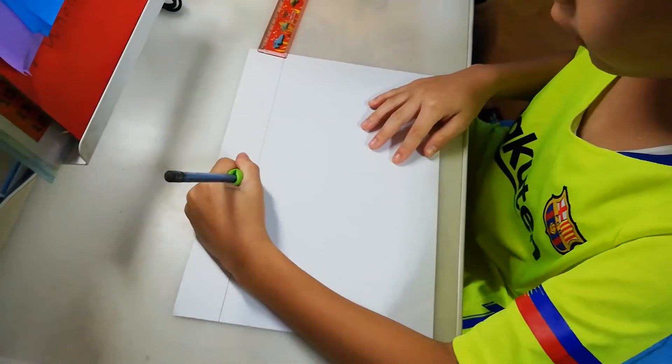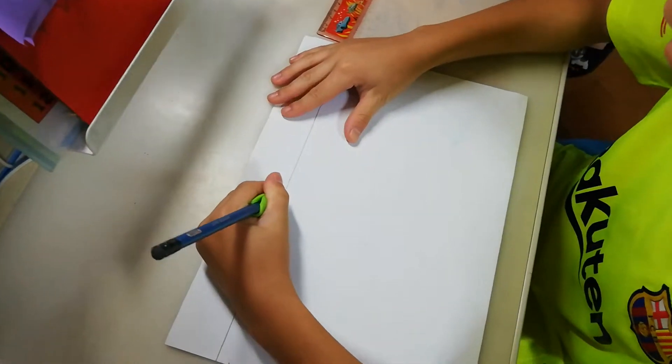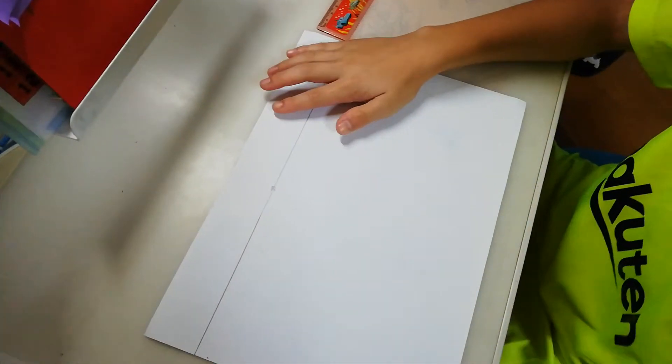Then, you can draw a little square right in the middle of the line. And you can color it in. So it's going to be the tunnel.